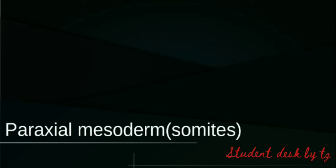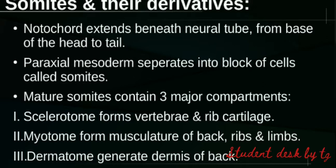In the paraxial mesoderm, we will discuss somites and their derivatives, and also what is the lateral plate mesoderm. First, we will discuss somites and derivatives. We know that the notochord extends beneath the neural tube, running from the head to the tail, and is present adjacent to our paraxial mesoderm.